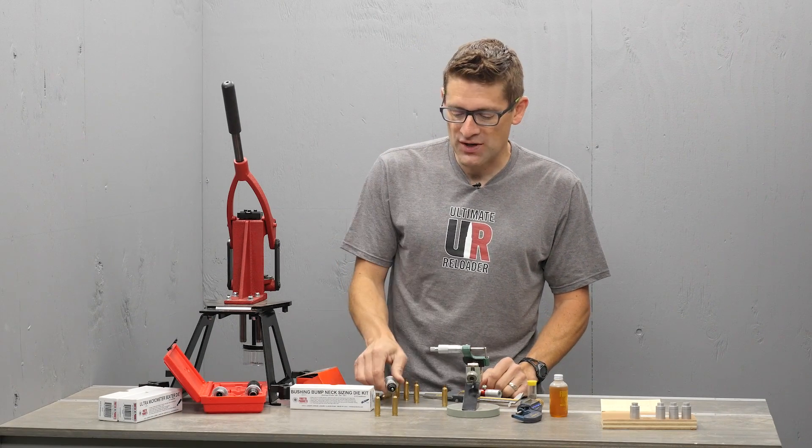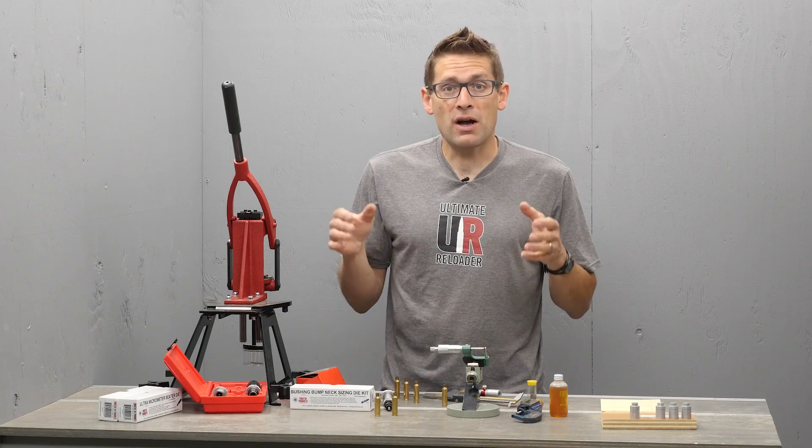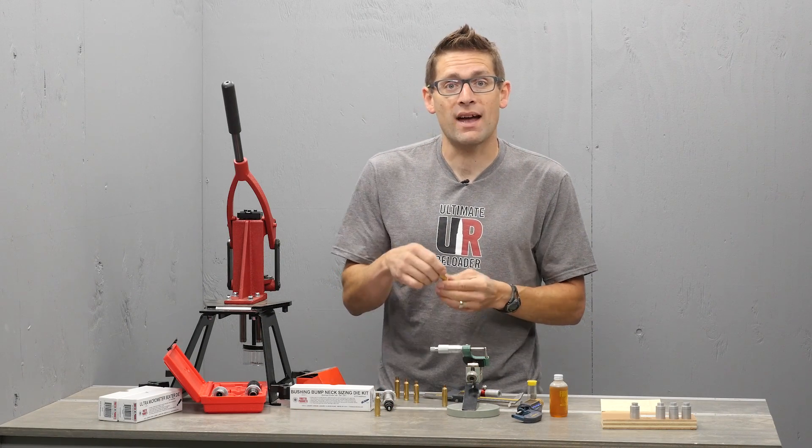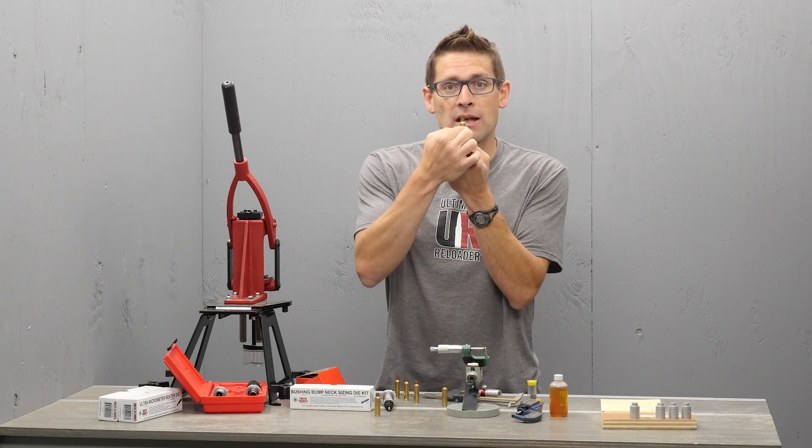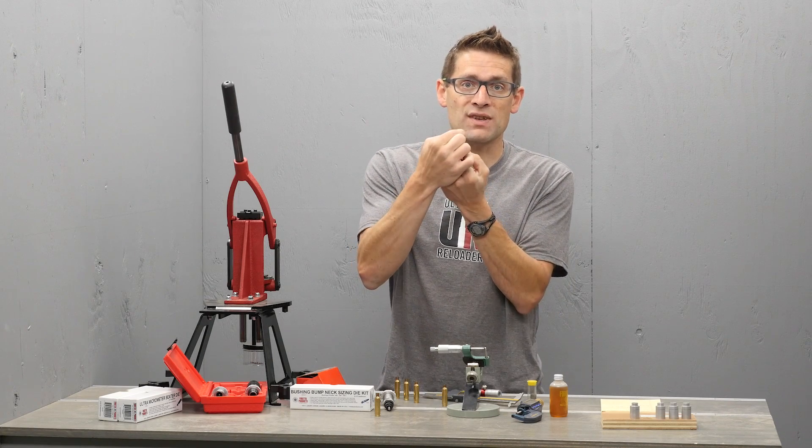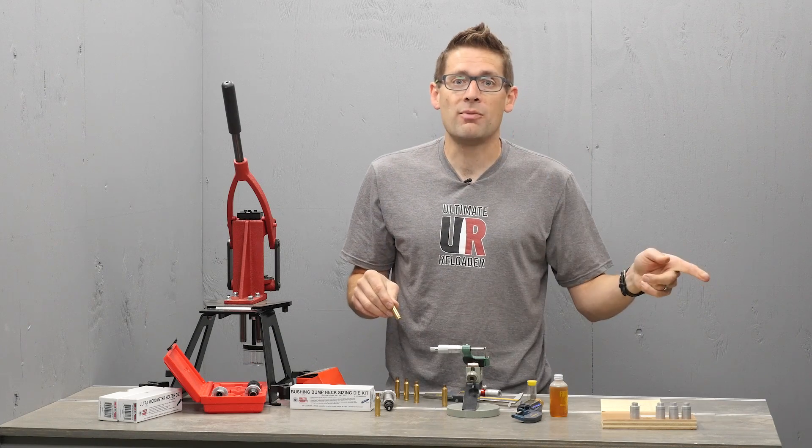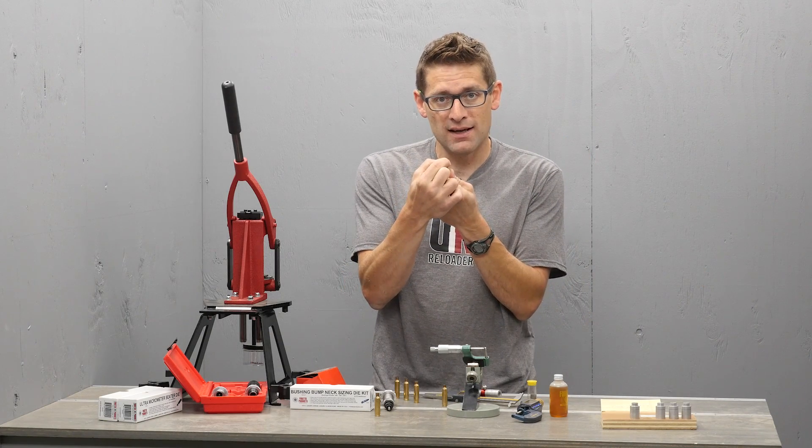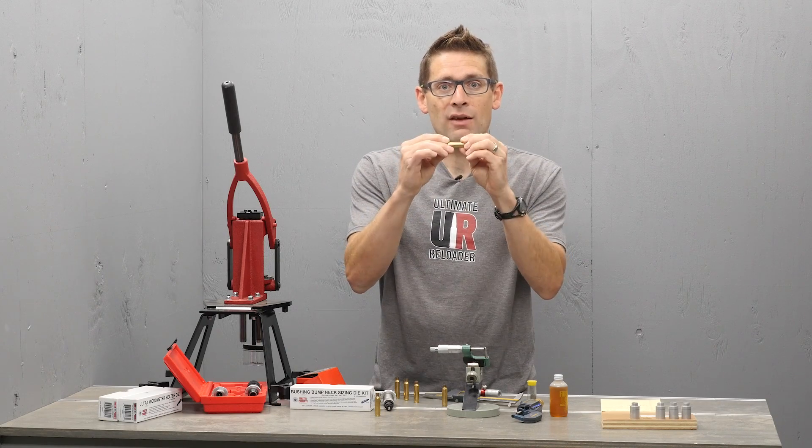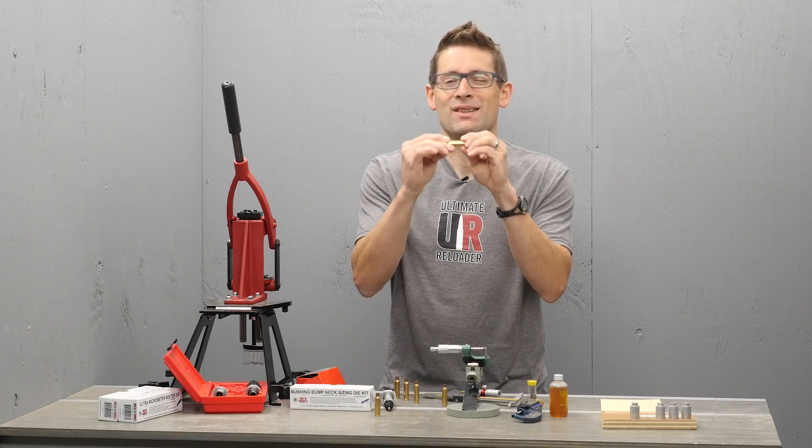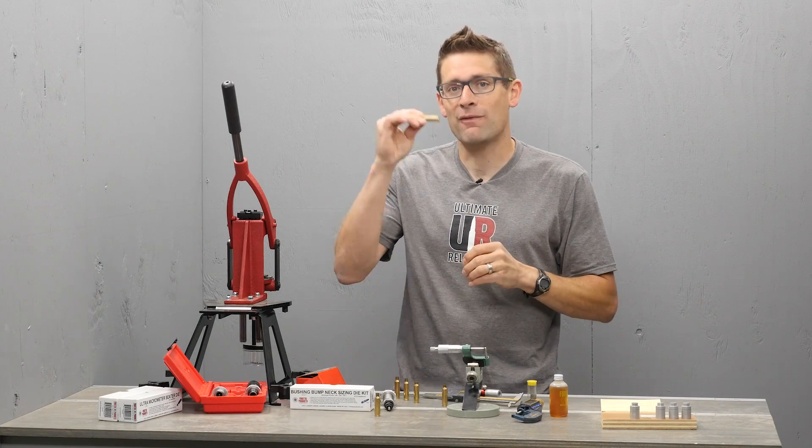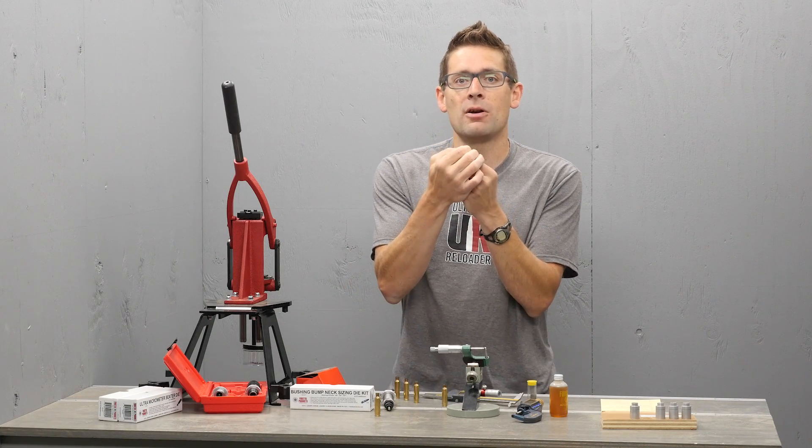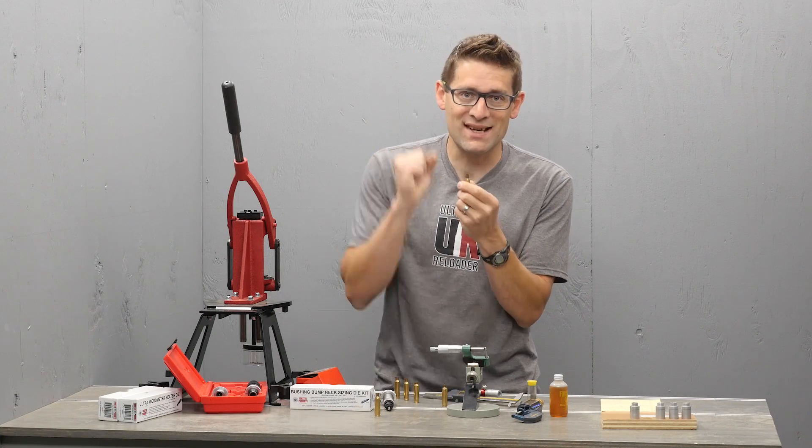Now normally for precision reloading, when you're talking about sizing, you have two distinct options. You can full length size, where you size the body, bump the shoulder, and reduce neck diameter. Or if you fire formed the brass in a match rifle, you might consider neck only sizing, where we retain the fire formed dimensions specific to the chamber in the firearm, and reduce neck diameter to get proper bullet tension.